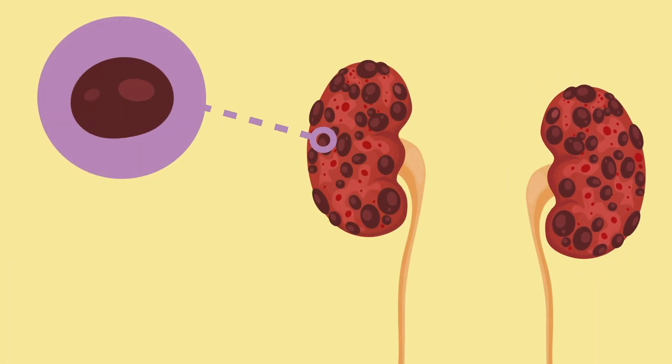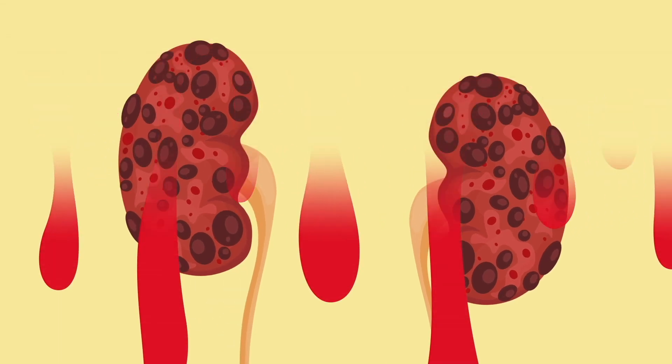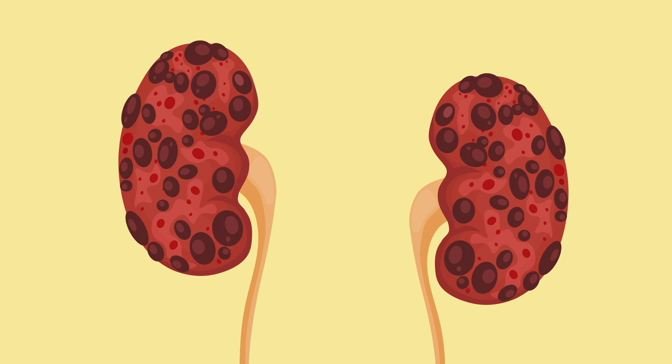As the cysts grow, they can damage blood vessels leading to bleeding, which causes episodes of acute pain. Also, these bleeding cysts can rupture, causing blood to accumulate in the kidney surroundings, which is also a cause of acute pain.